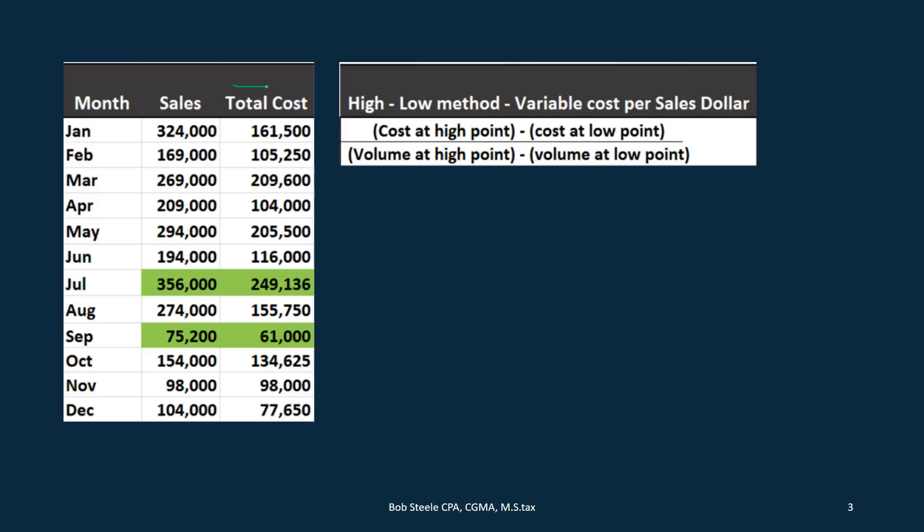In order to do that, we can try to figure out the estimated variable portion and fixed portion of a cost, and we can use the high-low method to do that. We're going to look for a way to break out the variable portion, and once we know the variable portion we can of course figure out what the fixed portion is — those being the two portions of the total cost.